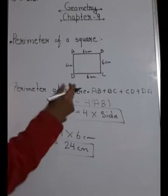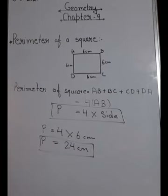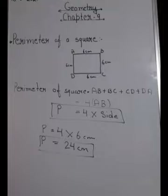So the perimeter of a square with side 6 is 24 centimeters. This is all for today - take care of yourself.